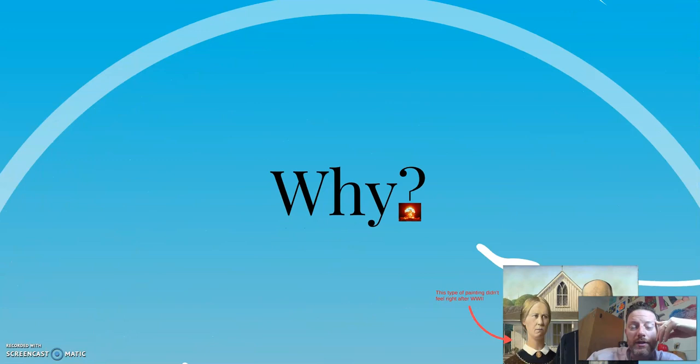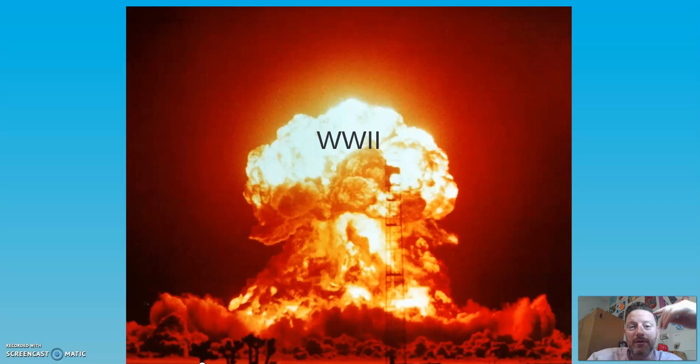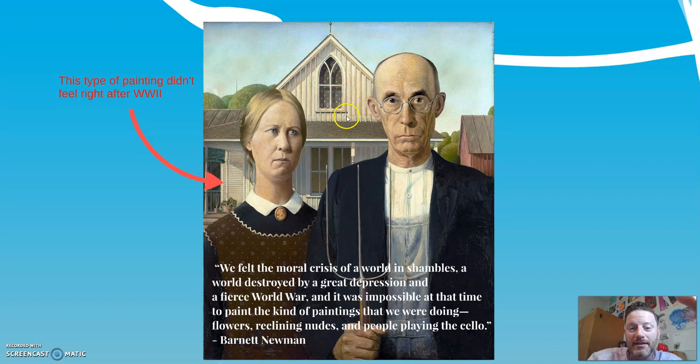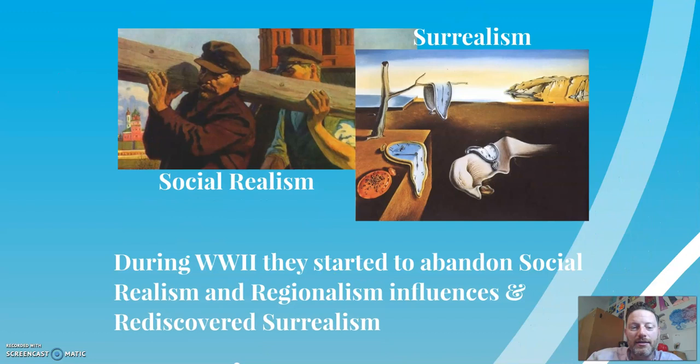It's World War II — it's fallout from this great war. People started saying paintings like American Gothic here in Iowa just don't feel right. Flowers, reclining nudes, people playing the cello — it didn't feel right in a time after World War II when the world got turned upside down. You have the horrors of the Holocaust and all these people dying in war. So they actually started to go back to surrealism, looking at how art reacted after World War I, moving away from realistic painting more toward the surrealistic.